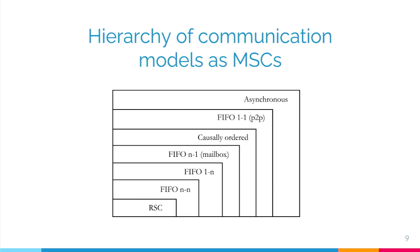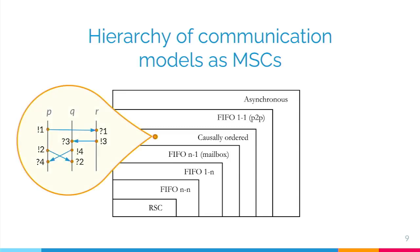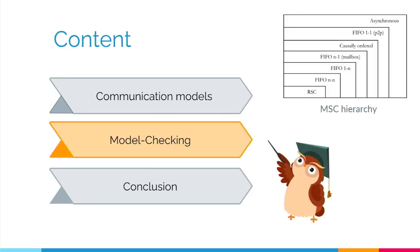After formalizing and studying the relationships between the seven communication models, we came up with this hierarchy. What this hierarchy tells us is that if, for instance, we consider an MSC which is realizable by using causally ordered communication, this same behavior could also be realized using FIFO one-to-one communication or fully asynchronous communication. These results proved very useful in deriving some decidability results for the model checking problem, which is the focus of the next section.